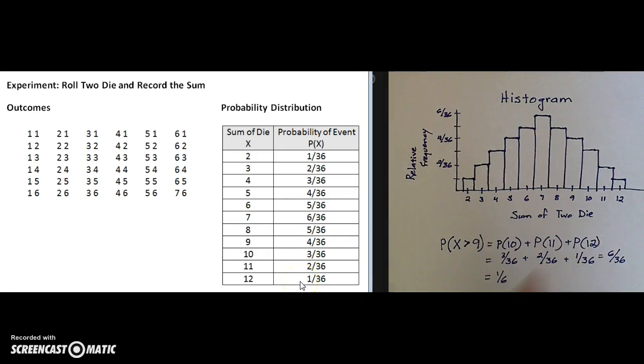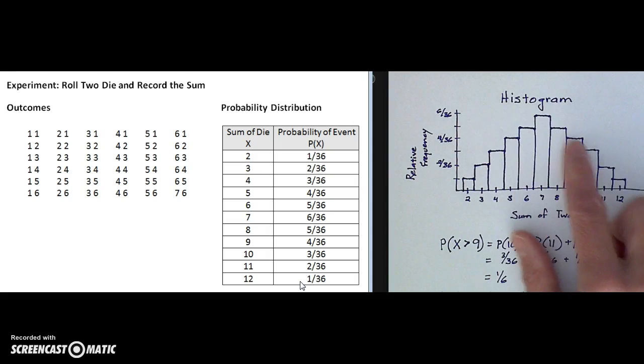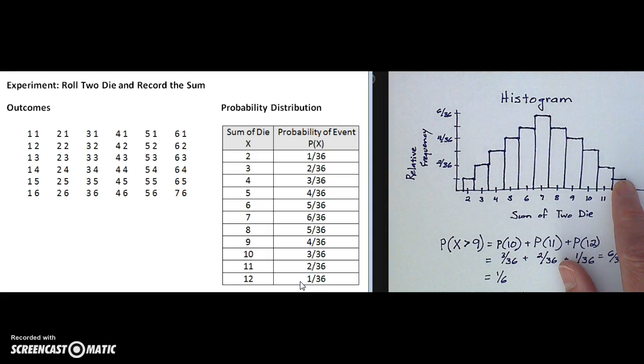The histogram to the right is a pictorial way of representing those probabilities. We can see that there's symmetry going on with the probabilities or relative frequencies. This picture is called symmetric. Both the left and the right hand side are symmetric to one another.